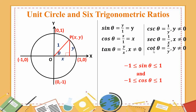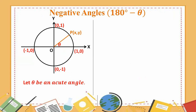Sin y, cos x — these are the key values. The value ranges from minus one to one. We need to consider the negative angle and 180 degrees minus theta.